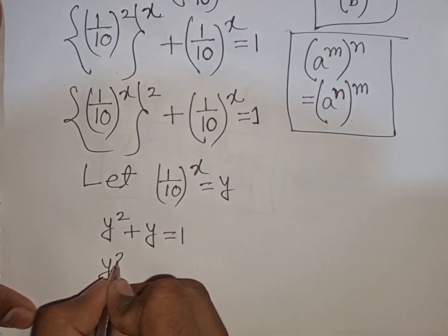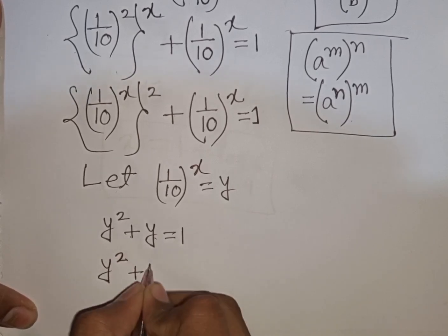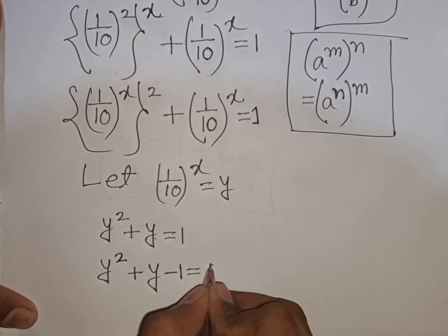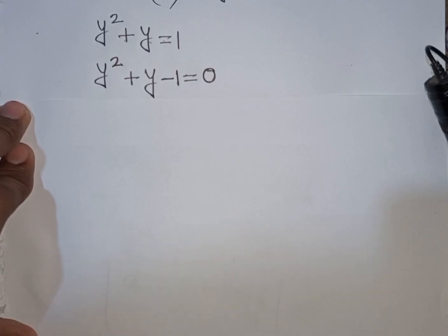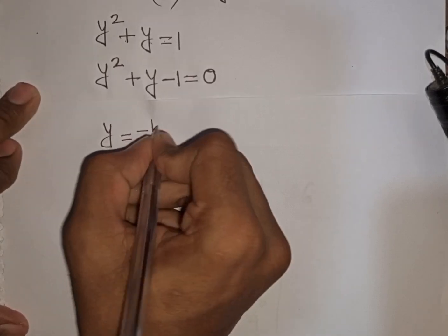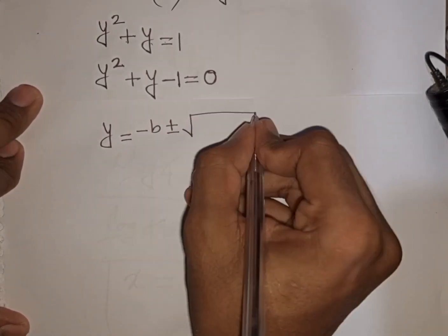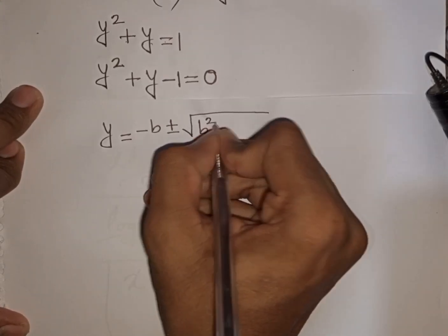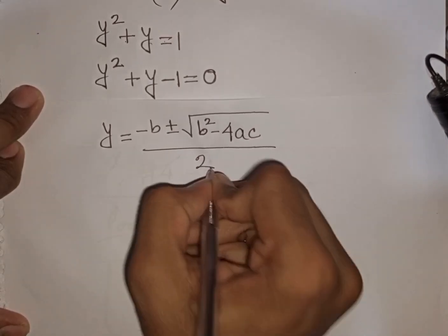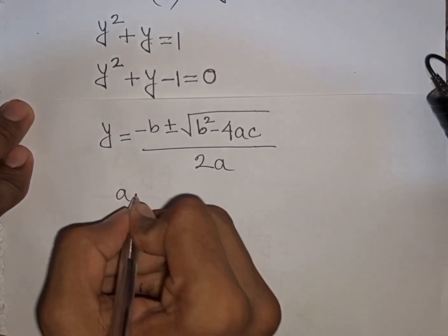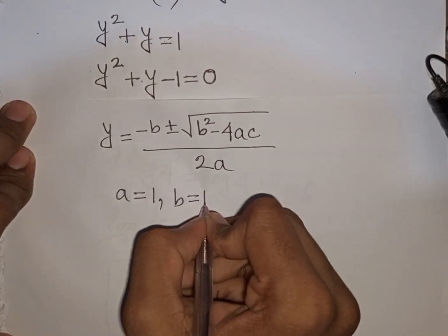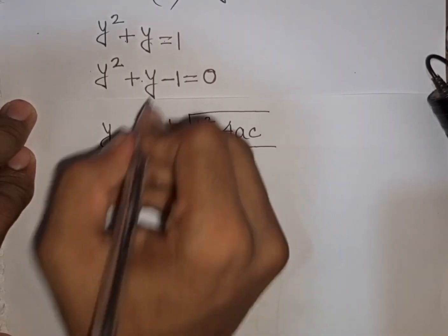We can write y squared plus y minus 1 is equal to 0. We apply the quadratic formula: y equals minus b plus or minus square root of b squared minus 4ac, divided by 2a. Here a equals 1, b equals 1, and c equals negative 1.